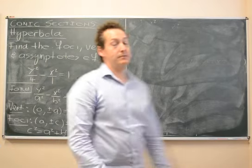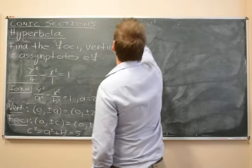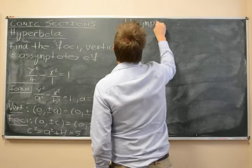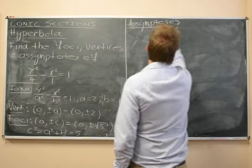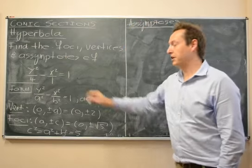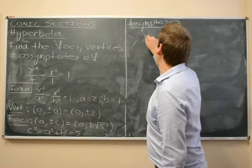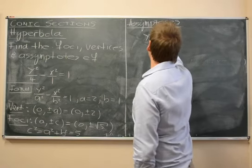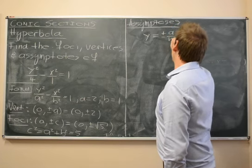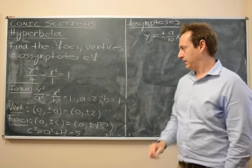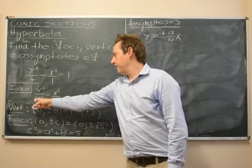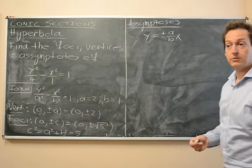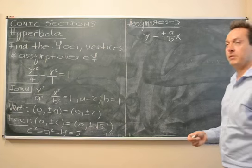And lastly, we need to see what the asymptotes are. Well, the asymptotes are going to be y is plus or minus a over b x. So it's always the divisor for y divided by the divisor for x, no matter what the form of the hyperbola is.